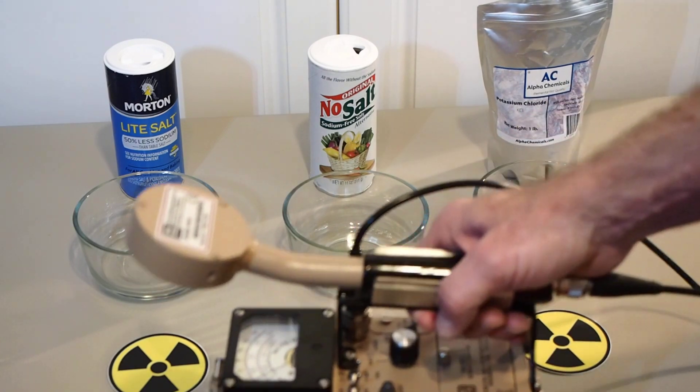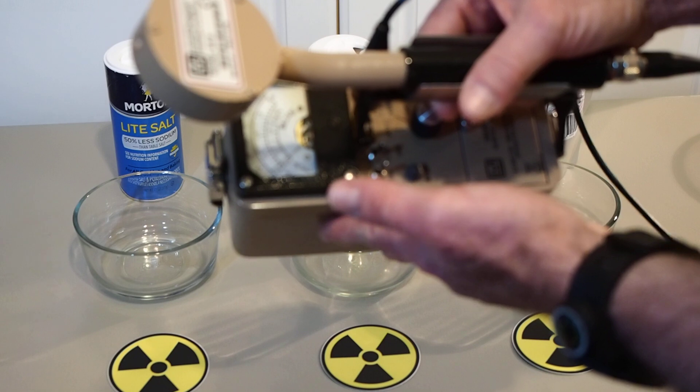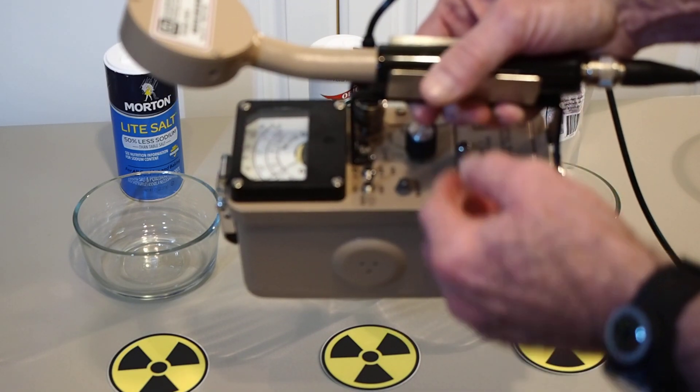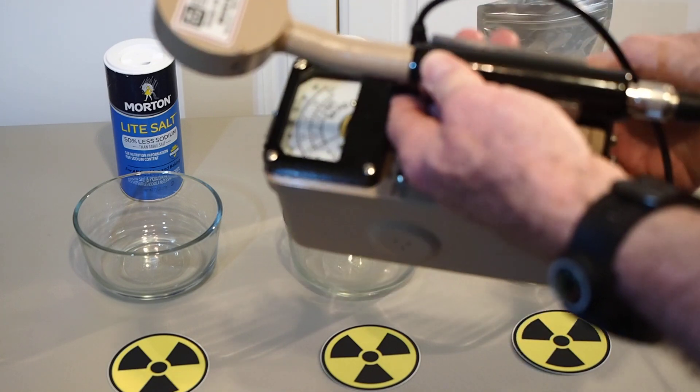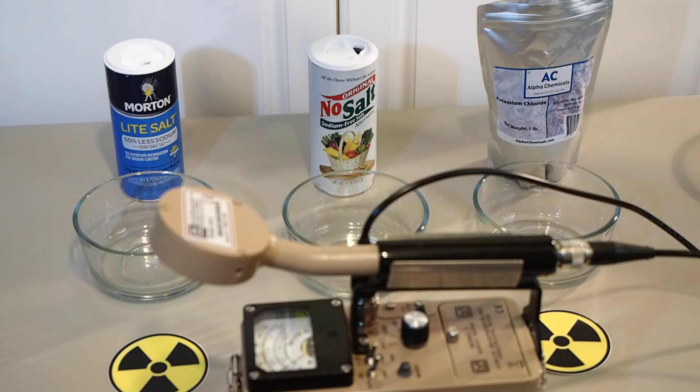The survey meter that we'll be using is the Ludlum measurements model 3 survey meter with the attached detector, which is a 44.9 alpha beta gamma detector. The potassium-40 that we're going to be measuring in these products is actually a beta and gamma emitter. And I'm expecting that we'll get some pretty low readings. So let's get started.